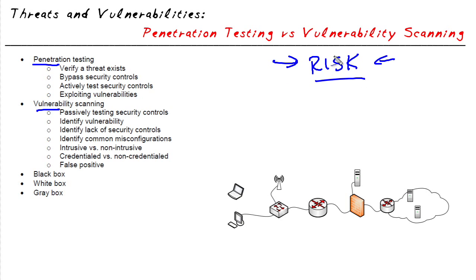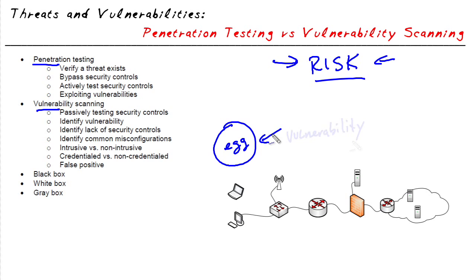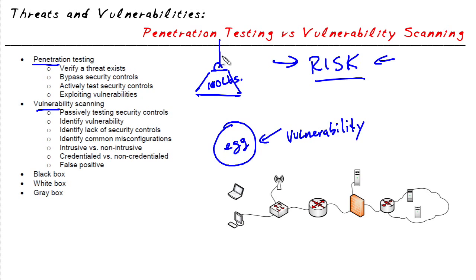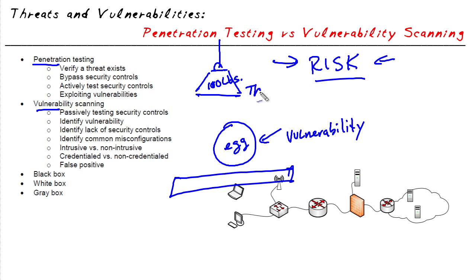To really understand risk, we have to take a look at the concept of what a vulnerability is. A vulnerability is like an egg — a raw egg. The vulnerability for the egg would be its fairly fragile shell. Now imagine a 100-pound weight hanging by a rope over the egg, and under the egg we have concrete. This 100 pounds dangling by a rope would be considered a threat.